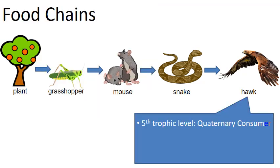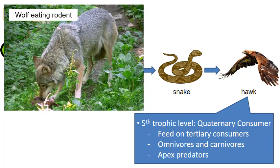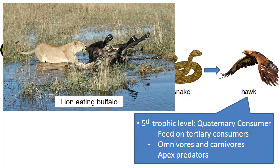At the fifth trophic level, we have the quaternary consumer — the fourth consumer — which feeds on the tertiary consumer. At this point we're looking at the top carnivores and omnivores: the apex predators. These are predators that don't have predators themselves. Examples include a wolf eating a rodent, a bear, and a lion eating a buffalo — animals at the top of the food chain in their environments.